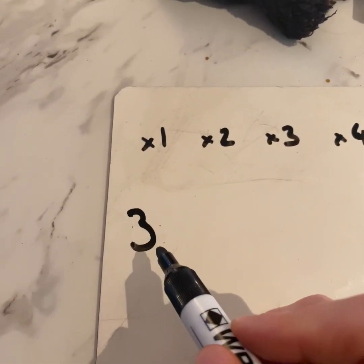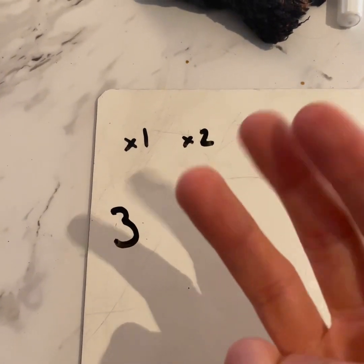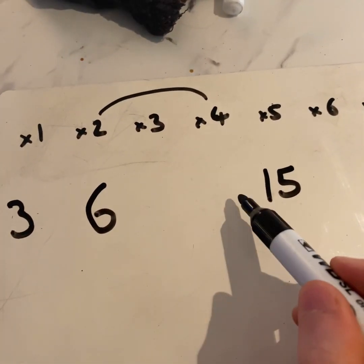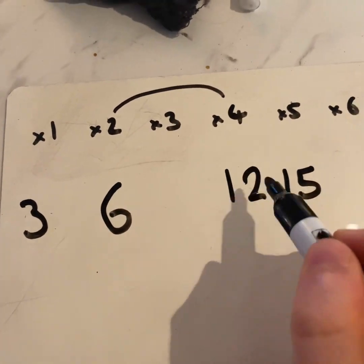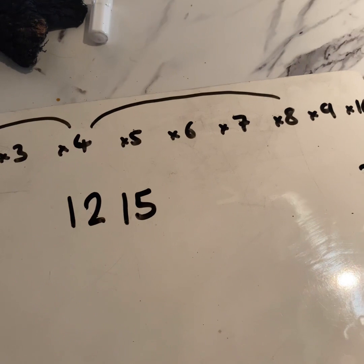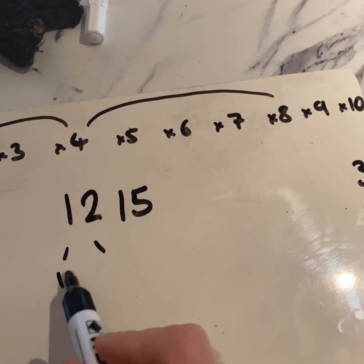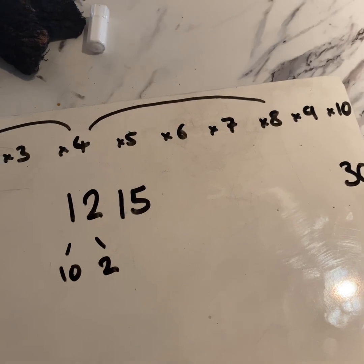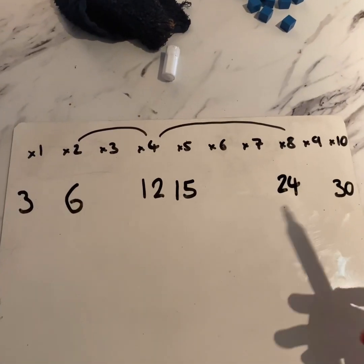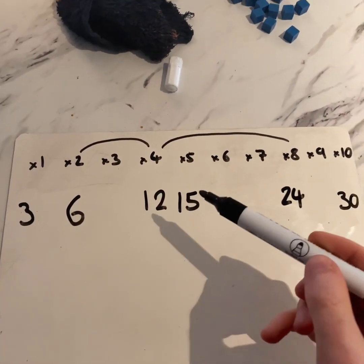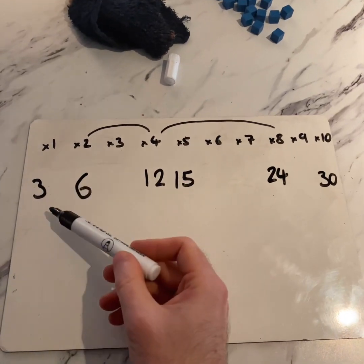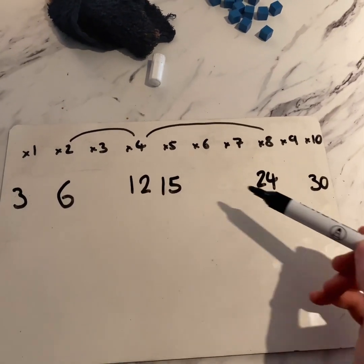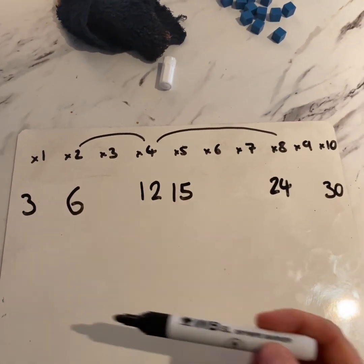What is double three? Three add three — six. Can you double six? Double six is twelve. Can you double twelve? Think about it this way: ten and two. Double the ten, double the two, add them together. Double twelve is twenty-four. So we can count: three, six, twelve, fifteen, twenty-four, thirty. Let's go back: thirty, twenty-four, fifteen, twelve, six, three.